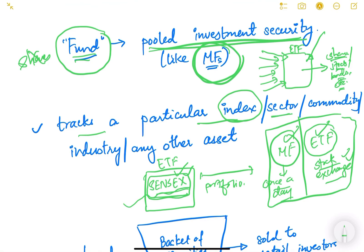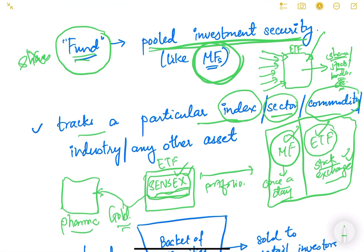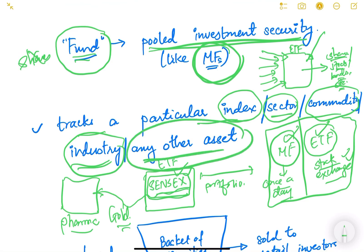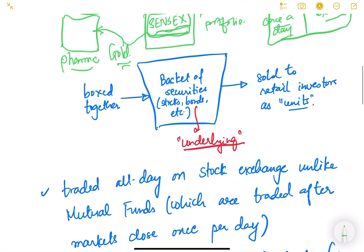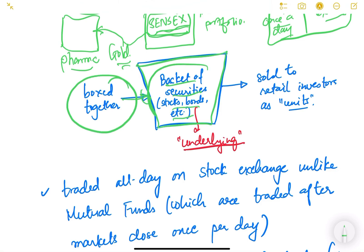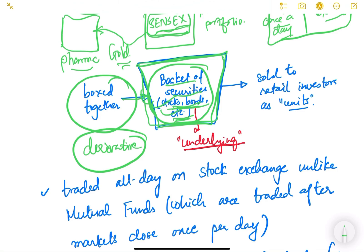An ETF can also be designed to track a particular sector — for example, the pharma sector — making it a pharma sector ETF. It can track a particular commodity such as gold, making it a gold ETF, or it can track any industry or asset class like real estate. There is a lot of flexibility in ETF design. Essentially, a basket of securities like stocks and bonds are boxed together as the underlying assets, and the movement in these securities determines the price of the ETF. It is also a kind of derivative instrument because the ETF derives its value from the stocks and bonds it has invested in.